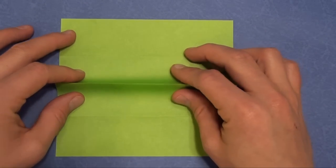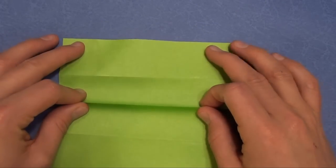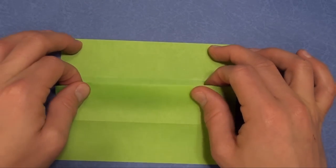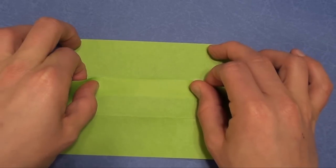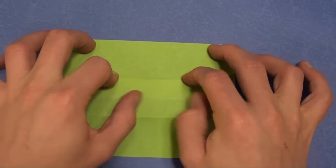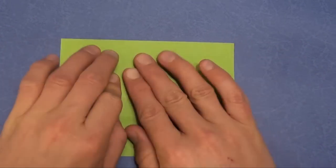Now turn it over and we have three mountain folds. We're going to take the center one, lift it up and fold it onto the upper mountain fold crease. Right there and flatten it.